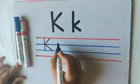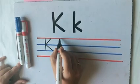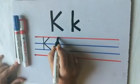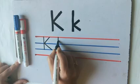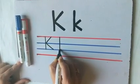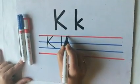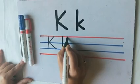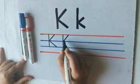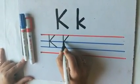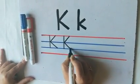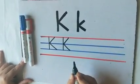Let us write it once more. Capital letter K. First we will make a standing line from the first red line to the second blue line. Then we will make a right slanting line from the first red line to the first blue line. Then we will make a left slanting line from the first blue line to the second blue line. This is capital letter K.